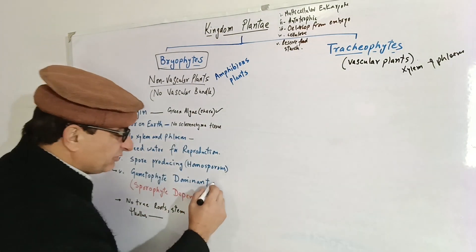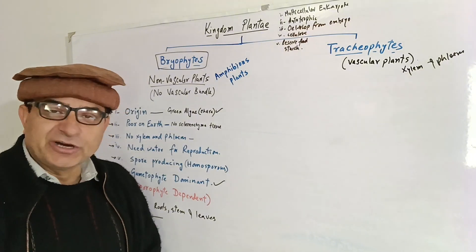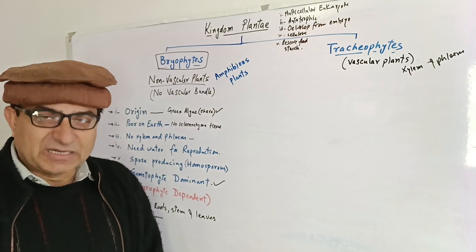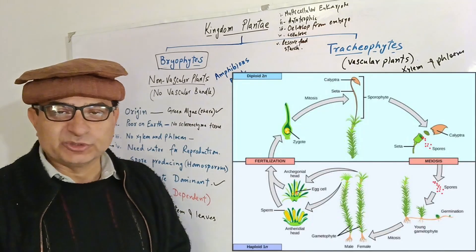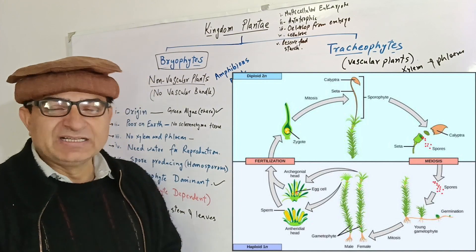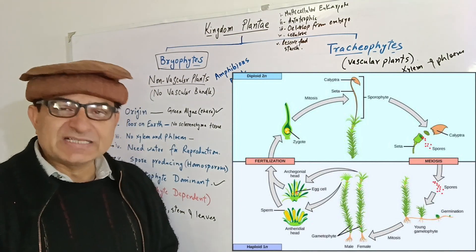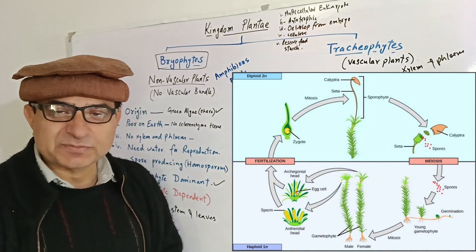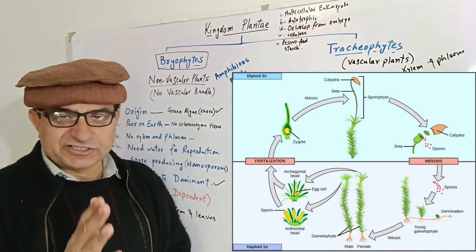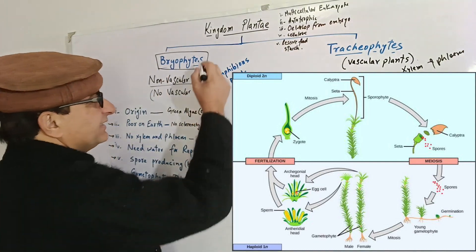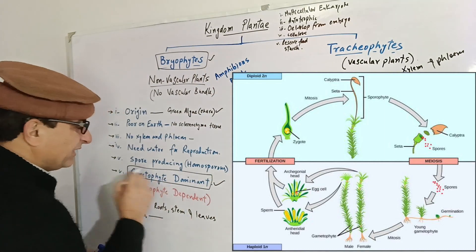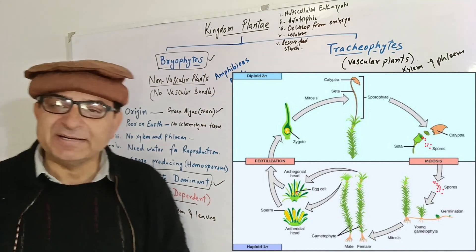In bryophytes, the gametophyte generation is dominant. In plants, there are two generations: the gametophyte generation, which produces gametes (sperms and eggs), and the sporophyte generation, which is responsible for formation of spores. These two generations alternate with each other. In case of bryophytes, the gametophyte generation is the dominant one, while the sporophyte generation is dependent.